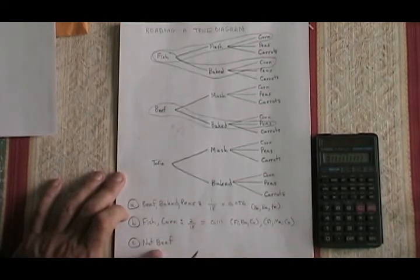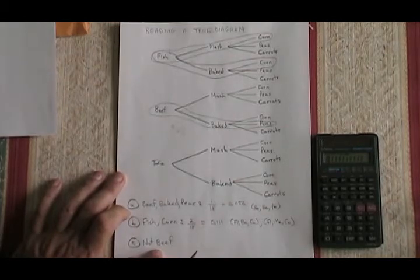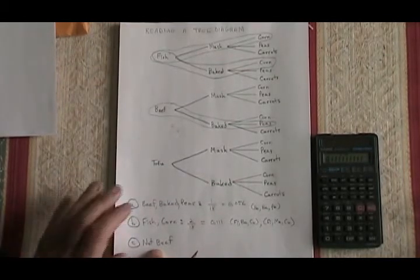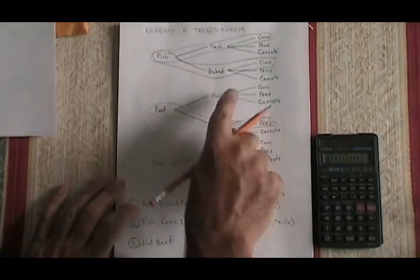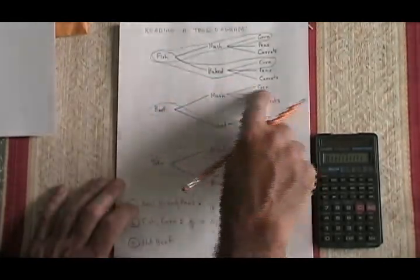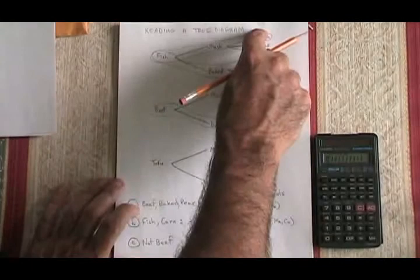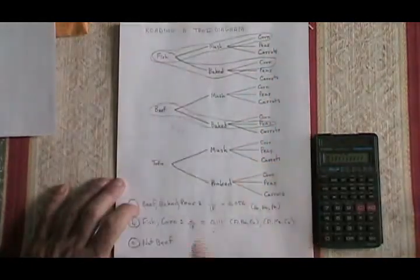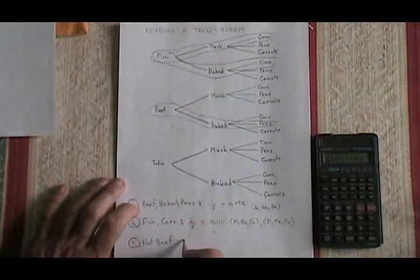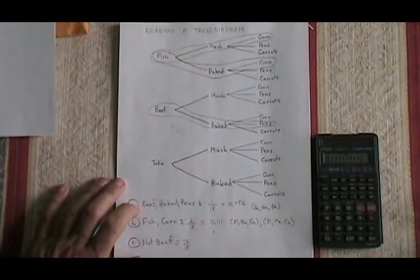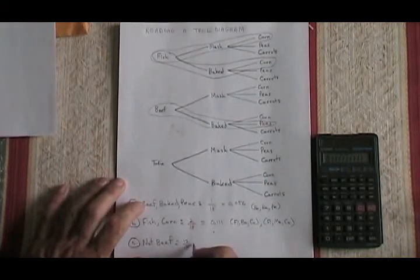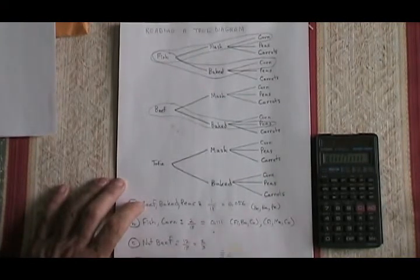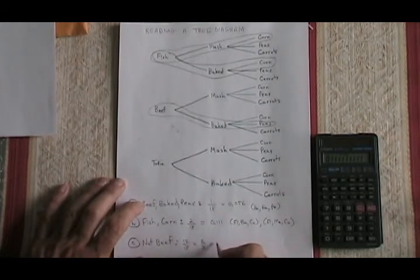How about another type of question where they say, what are the choices that do not include beef? Well, we can't include any of these six in the middle. But all six of these fish choices count and all six of the tofu choices count. There are 12 out of 18 choices that do not include beef. This reduces to two thirds and converts in decimal form rounded to the nearest thousandth into 0.667.